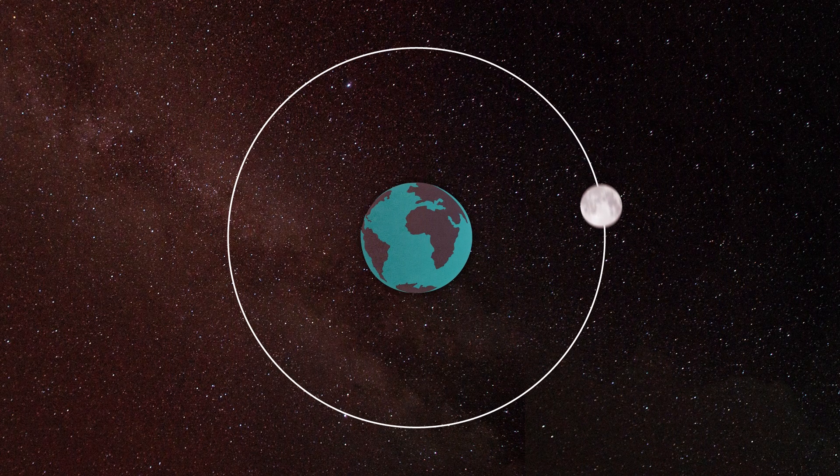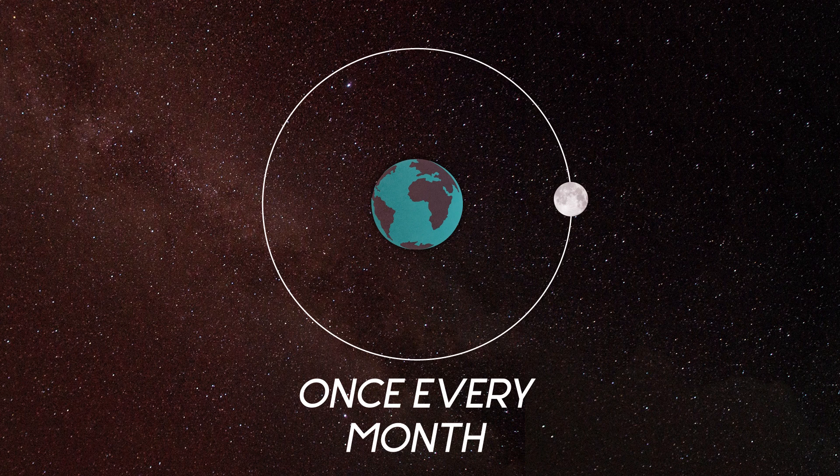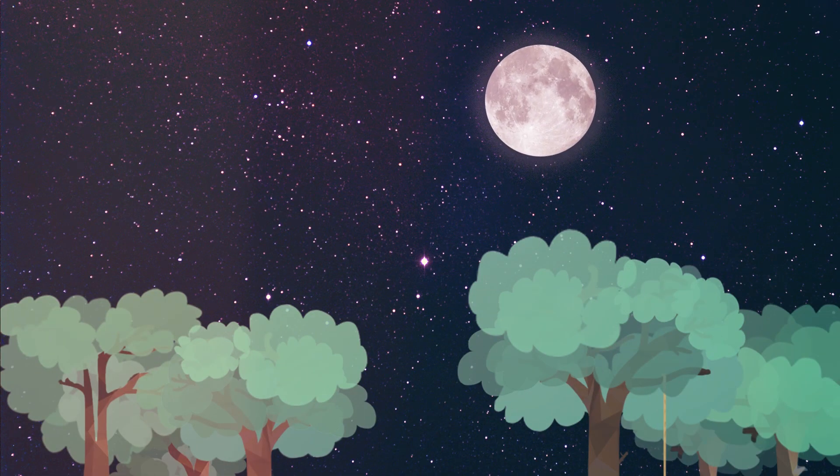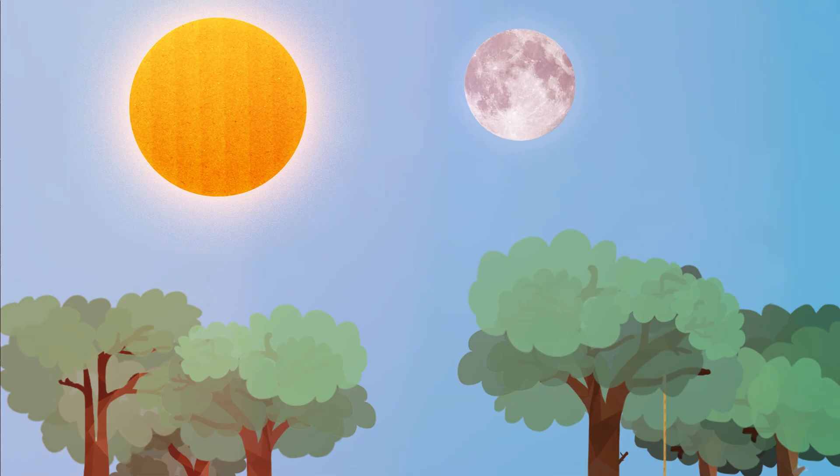But sometimes you can also see the moon during the day. The moon moves around the Earth, making a full trip all the way around our planet once every month. And during some of that month-long trip, you can see the moon only at night. But at other times, you can see it during the day.